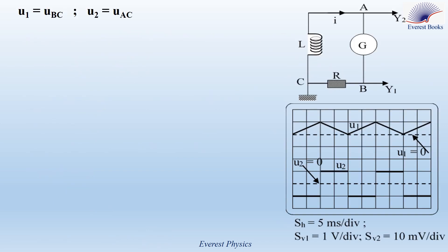The ground of the oscilloscope is connected to point C. Since channel 1 is connected to point B, channel 1 displays the voltage UBC equal to U1 across the resistor. Since channel 2 is connected to point A, channel 2 displays the voltage UAC equal to U2 across the coil. The generator G sends a triangular current.